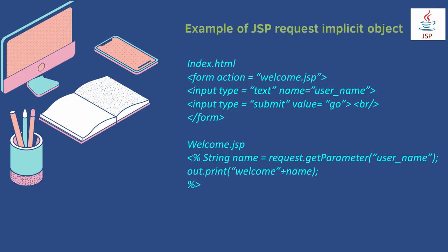In the example of the GSP Request implicit object, we have used an HTML page index and created a form because we need a text box and a button. We create a form for input values, and welcome.gsp is for printing the values. In welcome.gsp we have taken a name variable of string type, and request.getParameter() — where request is an object and getParameter() is a method in which we pass userName — and finally print the user name through the Out implicit object.